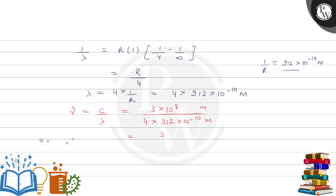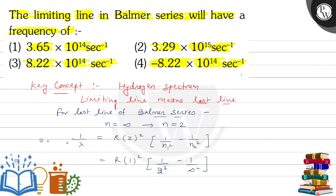This gives us 3 / (4 × 912) × 10³ s⁻¹, so we get ν = 8.22 × 10¹⁴ s⁻¹. This is the frequency of the limiting line in Balmer series — the answer is option 3: 8.22 × 10¹⁴ s⁻¹. Hope you understood it well, best of luck!